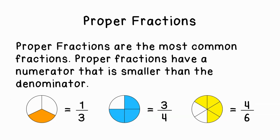So proper fractions are the most common type of fractions — the fractions that you're going to see when you think of fractions. Proper fractions have a numerator that is smaller than the denominator. If you look here along the bottom of your screen, you can see some examples: one third, three fourths, and four sixths — in each case the numerator is smaller than the denominator.